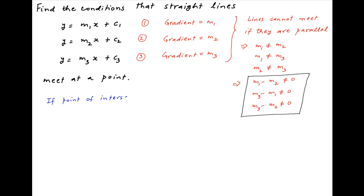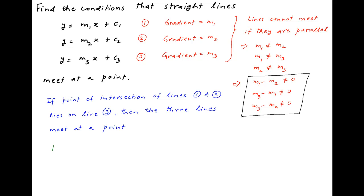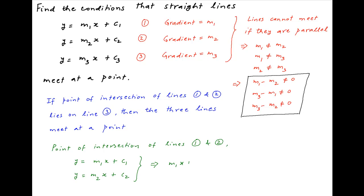Now these lines will meet at a point if the point of intersection of lines 1 and 2 lies on the third line. The point of intersection of lines 1 and 2, which are y equals m1x plus c1, and y equals m2x plus c2, is obtained by equating the value of y from both equations: m1x plus c1 equals m2x plus c2.